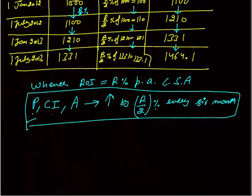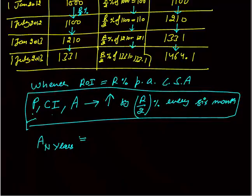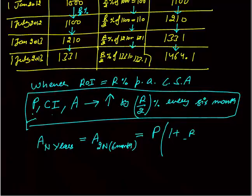Now what will be the basic formula for amount after N years, whenever the rate of interest is R% per annum compounded semi-annually? There are 2N six-month periods in N years. So the general formula is: Amount = P × (1 + R/2/100)^(2N). This is the formula for compounding semi-annually.